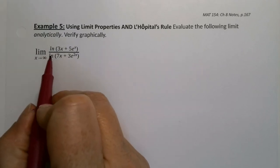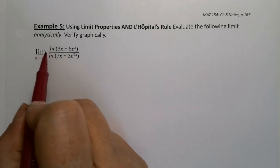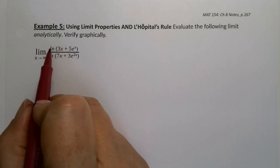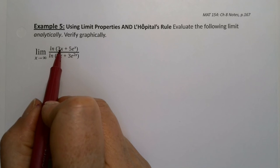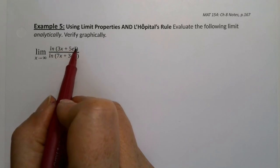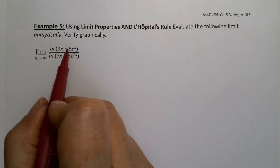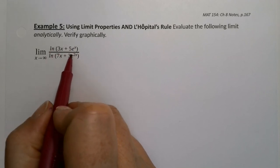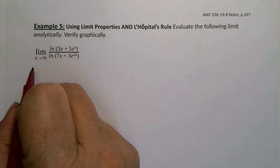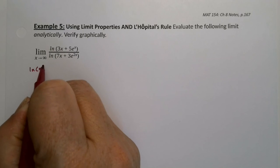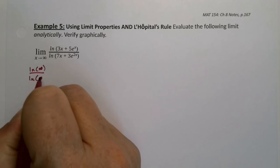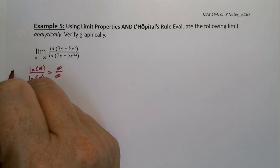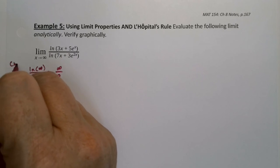Before we can use L'Hôpital's rule we need to check that this is going to work out the way we think it is. If you take the natural log of 3x plus 5e to the x, that's the natural log of infinity, which is infinity — so it's infinity over another natural log of infinity. The natural log of infinity over the natural log of infinity is infinity over infinity. Always want to check that form.